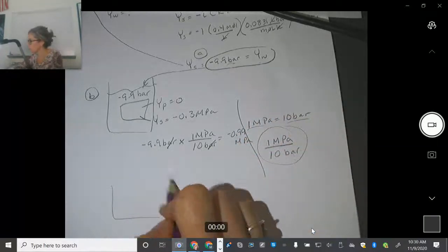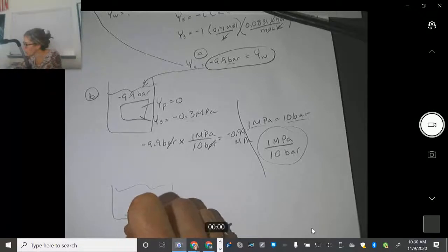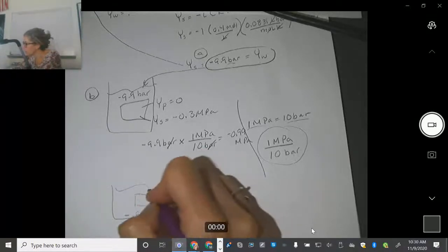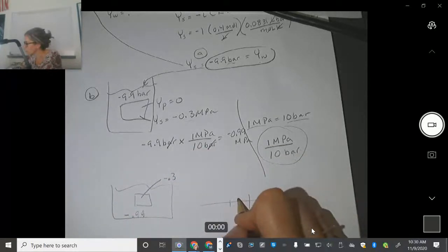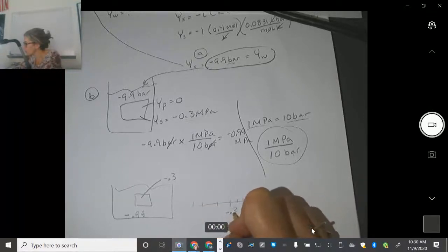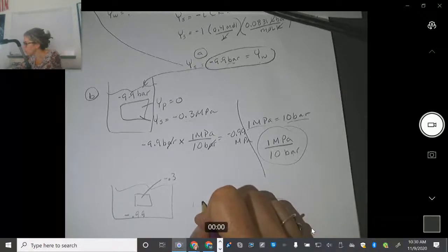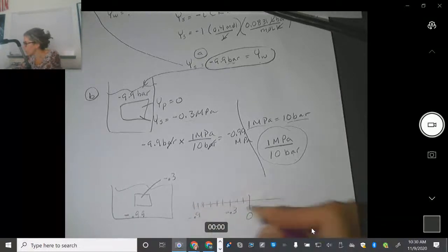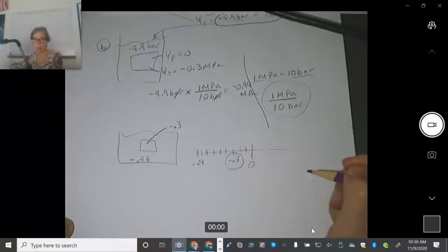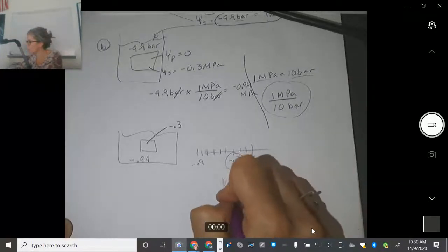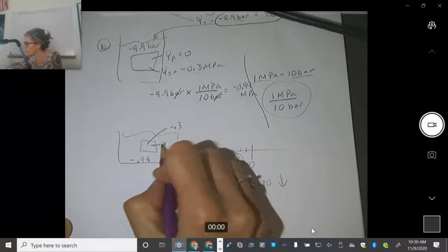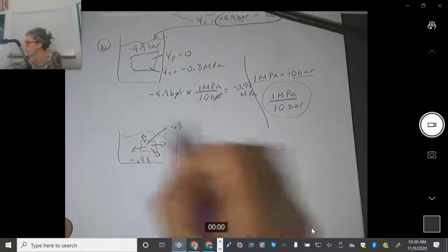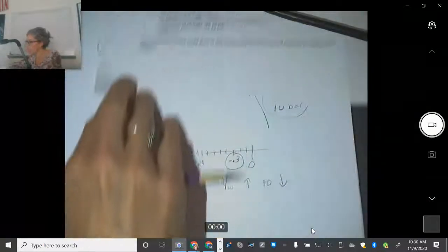So that means in here is negative 0.99. And my cell has negative 0.3. So here's the number line. That's negative 0.3, that's negative 0.9. This is actually my bigger number, right? So water's potential is going to go from a high to a low water potential. So this is my higher number. So water is going to leave, going out. So that's not good for the cell.